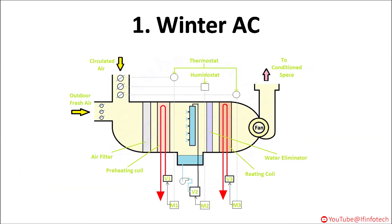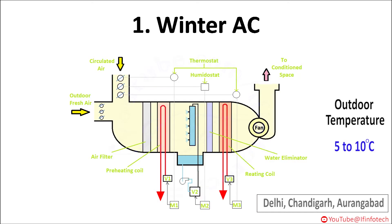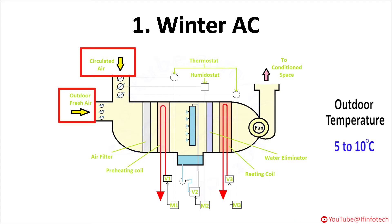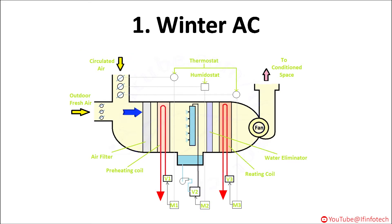We start with winter AC. This type of air conditioning system is used where outdoor temperature is low, about 5 to 10 degrees Celsius. Winter air conditioning system is used in cities like Delhi, Chandigarh, and Aurangabad during winter season to get comfort conditions. Here recirculated air and outdoor fresh air is mixed, and the stream of mixed air is passed to the spray chamber through a filter and heating coil.